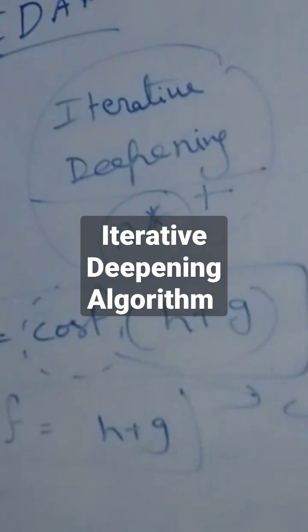The iterative deepening algorithm will work as an alternative to the A star algorithm to overcome the drawbacks of the A star algorithm. It will work on the cost H plus G.